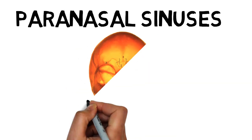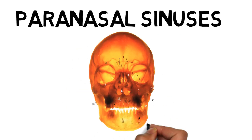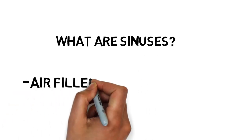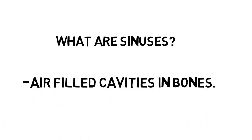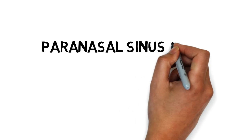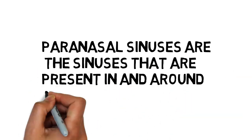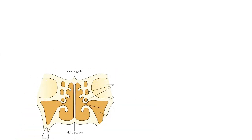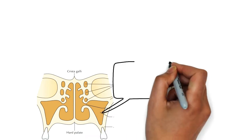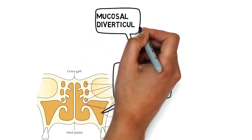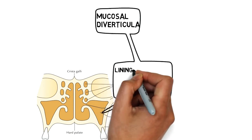Today we are going to discuss the paranasal air sinuses. First, you should know what sinuses are — they are air-filled cavities present in bone. The paranasal sinuses are sinuses present in and around the nasal cavity. They develop as a mucosal diverticulum of the main nasal cavity, invading the adjacent bones.